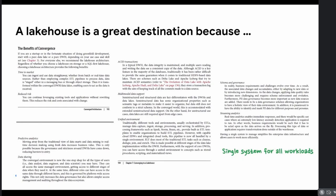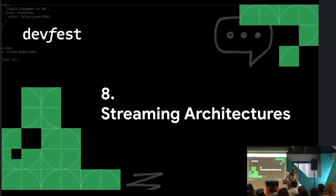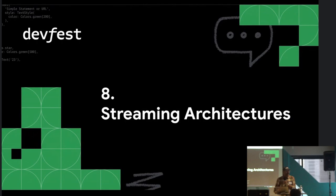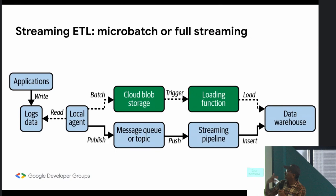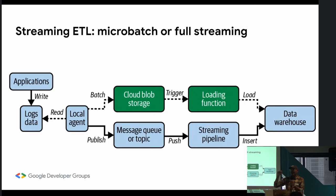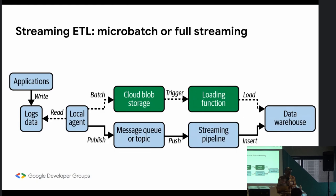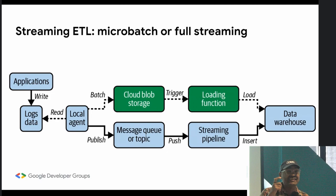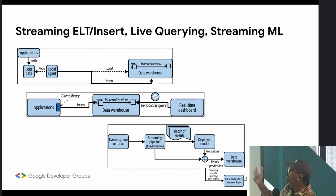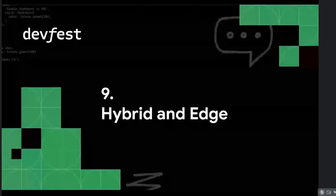Lake houses support all workloads, but the one they don't support very well is streaming, and over time you'll want to move toward streaming. You can start with micro-batching — rather than processing data once a day, you process it once an hour, once every five minutes, once every minute — getting close to streaming. But the ideal is to process events as they happen, which is full streaming. You need to decide between streaming ETL — processing data and inserting into a data warehouse to support live querying — versus streaming machine learning to make decisions on events as they happen. The architecture differs depending on which you choose.